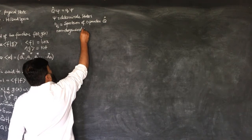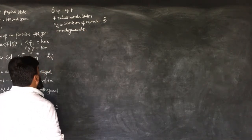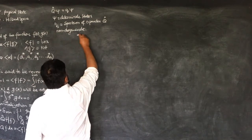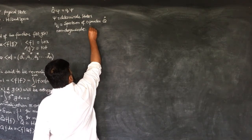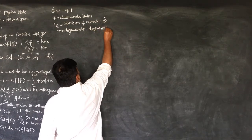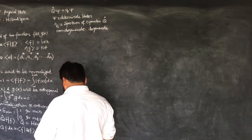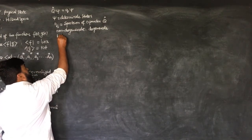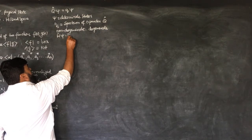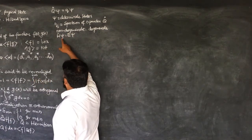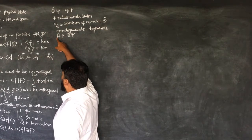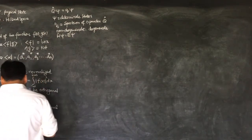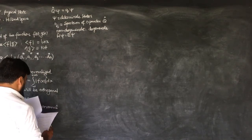We call it a non-degenerate spectrum or non-degenerate values. And when two or more eigenvalues are the same, then we call them a degenerate spectrum or degenerate values of the state. For example, when I apply H on psi, I get E·psi. Then psi is called the eigenfunction of H and E is the eigenvalue — the eigenvalue of the Hamiltonian operator.